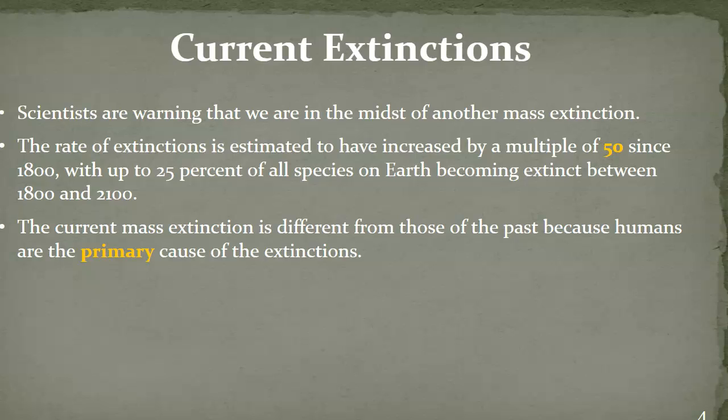Looking at current extinctions, scientists do believe we're in the midst of another mass extinction. We have increased the amount of species that have become extinct by a multiple of 50 since 1800, with up to 25% of all the species on Earth becoming extinct between 1800 and 2100. Our current mass extinction is different from the past because humans weren't the primary cause before — we had global changes in climate. We are considered the reason for this current mass extinction, because yes, it's a global change in climate, but it's a global change in climate that's due to us.